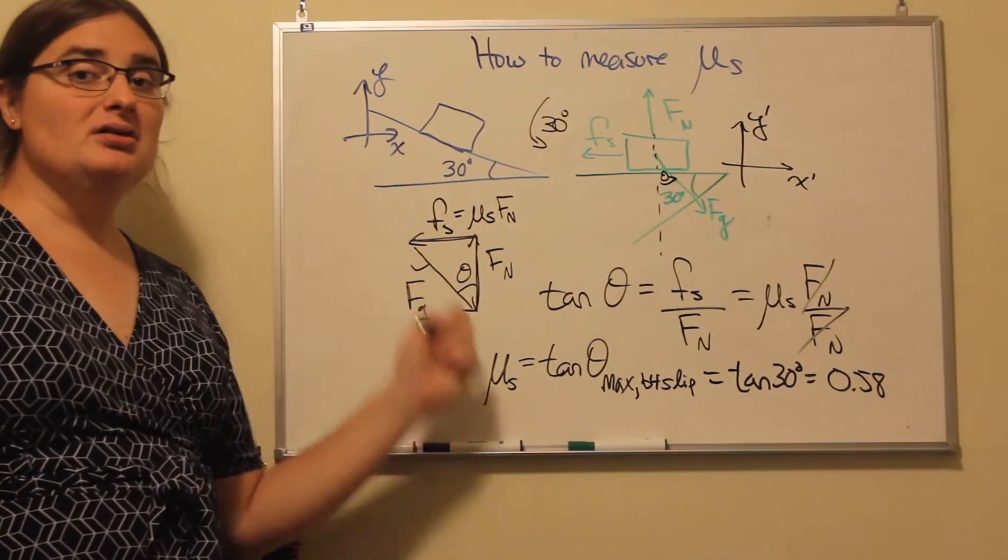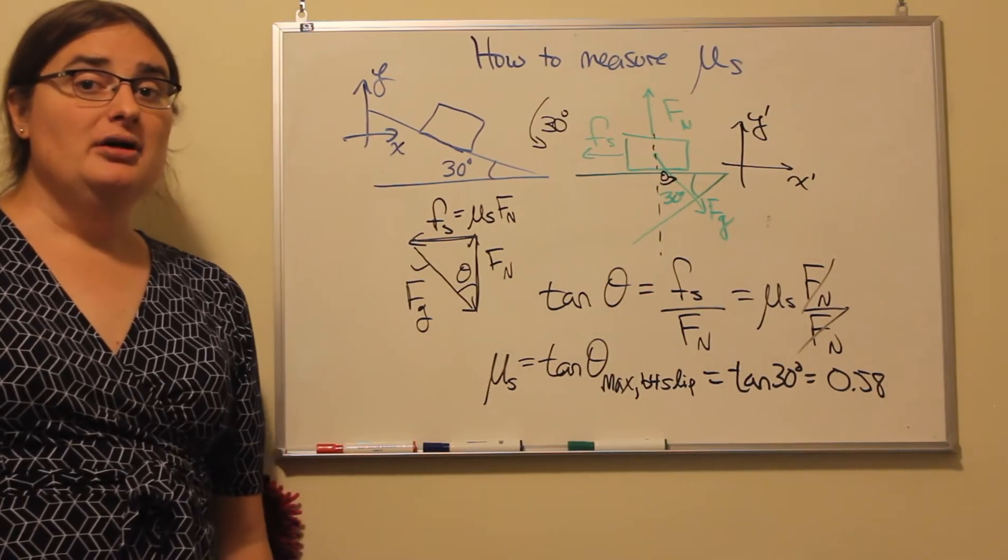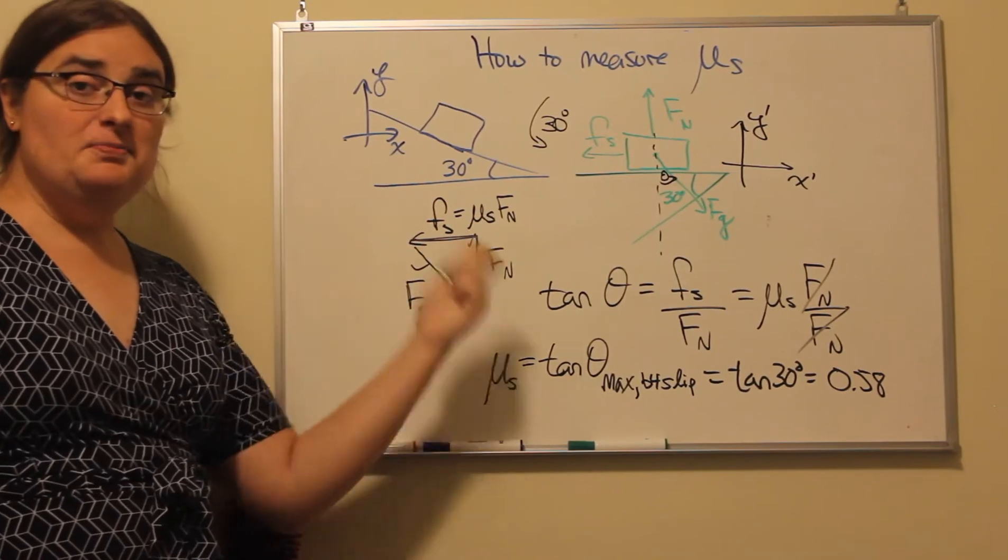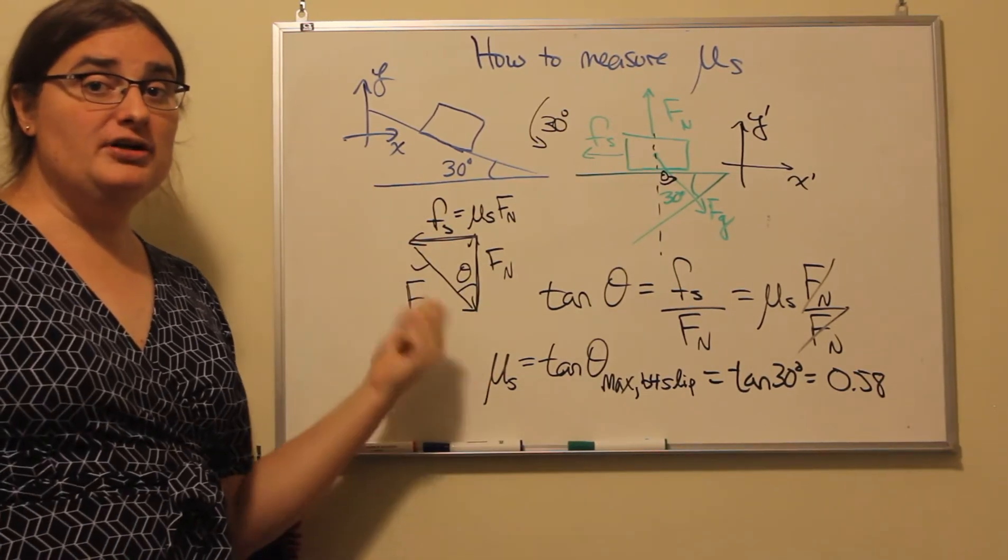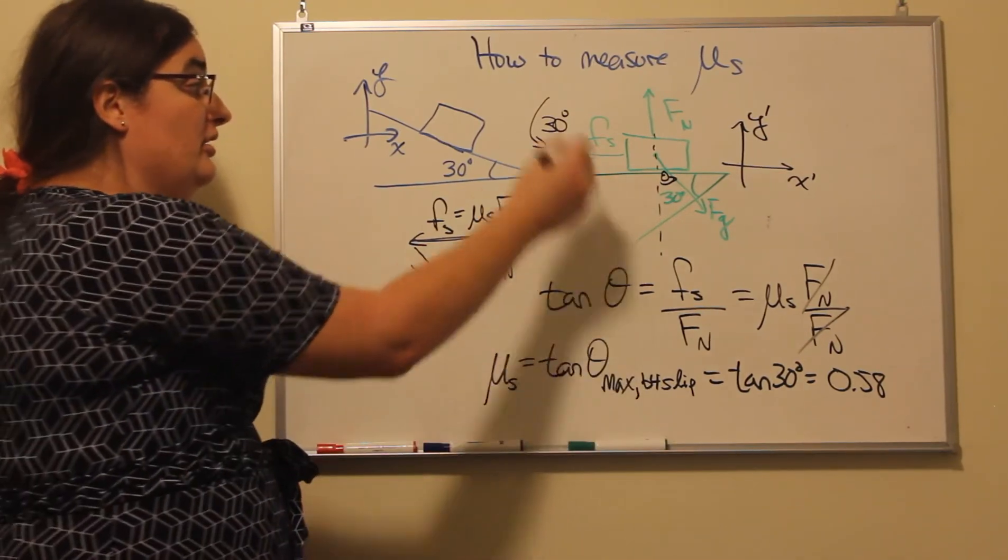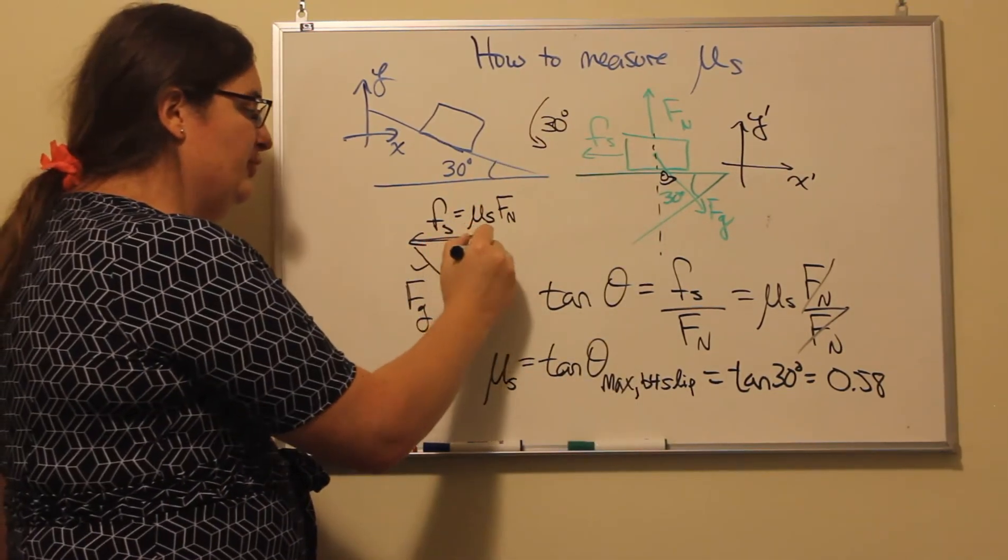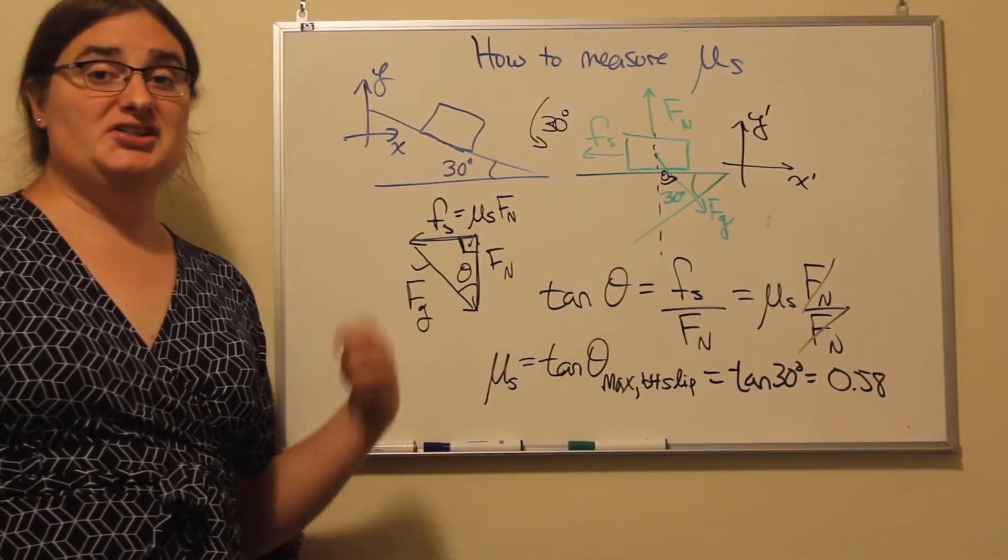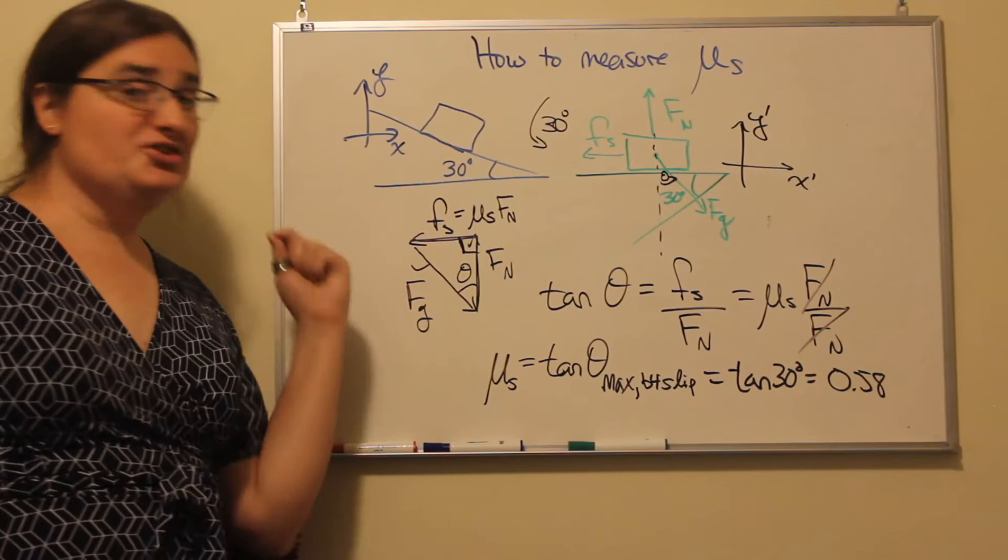Because in adding those three graphically head to tail, to be in equilibrium I should have a closed geometric shape, a triangle. And the force of static friction and the normal force have to be perpendicular to each other, so not only is it a triangle, it's a right triangle.